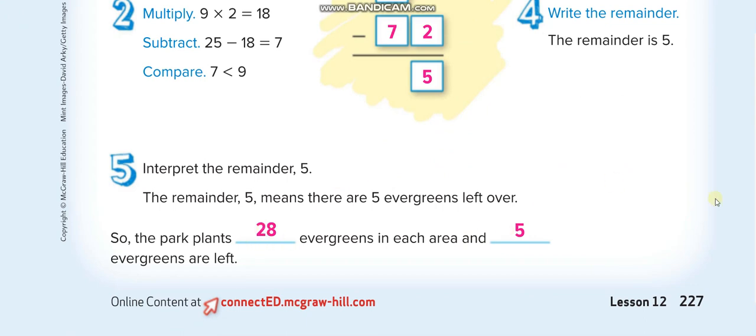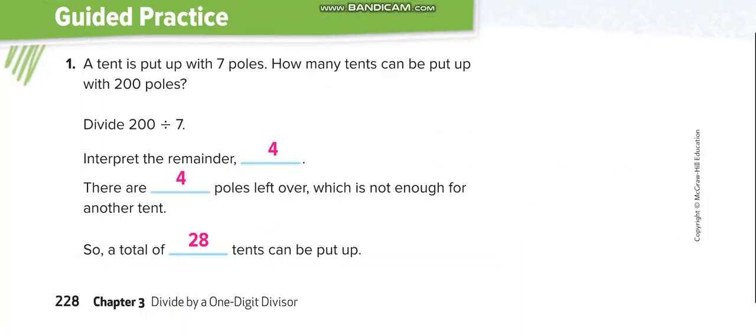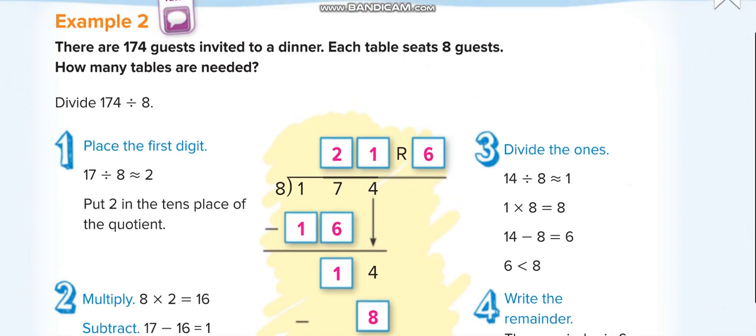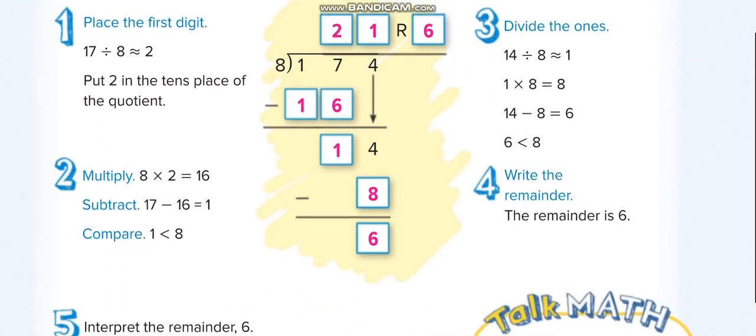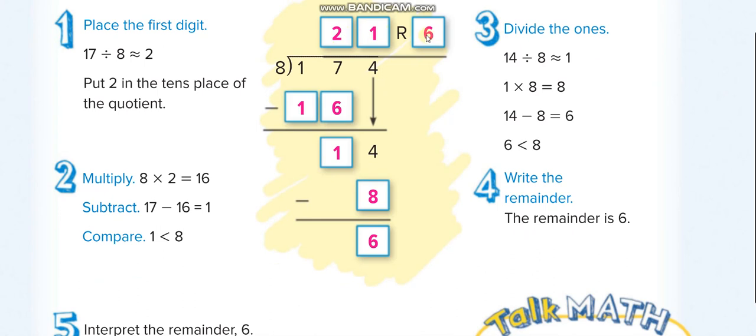But here, in the next question, if you see, there are 174 guests invited to a dinner. Each table seats 8 guests. So how many tables are needed? When we divide 174 with 8, we get 21, and the remainder is 6. So this 6 is what? The guests.